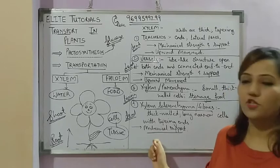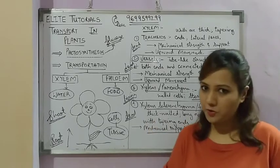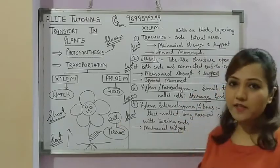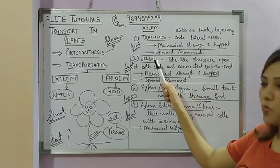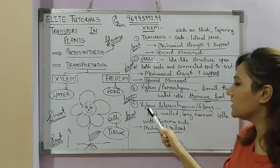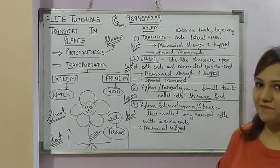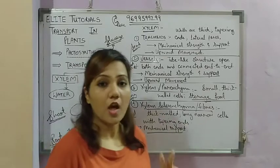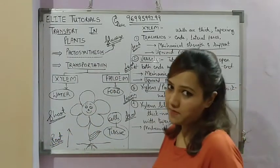Now let us understand the structure of xylem. Xylem is a tissue made of many cells. The xylem is made up of four types of cells: first, tracheids; second, vessels; third, xylem parenchyma; and fourth, xylem sclerenchyma, also called xylem fibers.